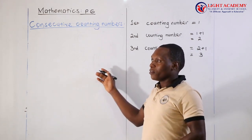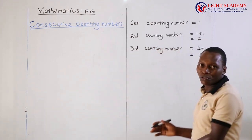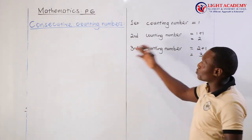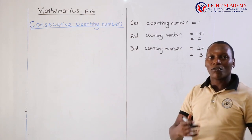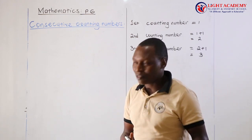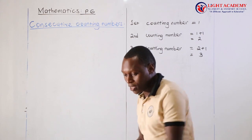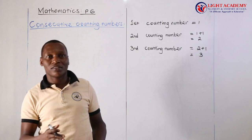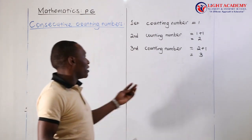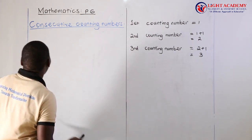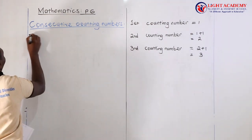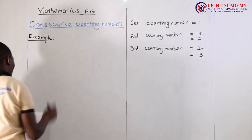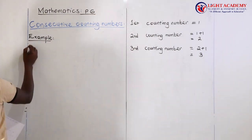However, in Primary 6, this method might take a lot of time to find many consecutive counting numbers. So in Primary 6 we shall get a format for finding these consecutive counting numbers. Let me give some examples here to show how best we can get these consecutive counting numbers.